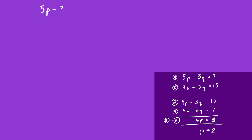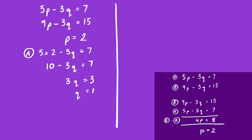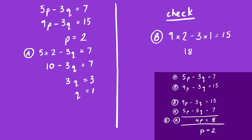Now stage two: substitute back in to find q. We can use either A or B — I'll use A. So 5 × 2 − 3q = 7; that's 10 − 3q = 7. 10 minus what makes 7? It must be 3, so 3q = 3, meaning q = 1. Finally, let's check by substituting back into B: 9 × 2 − 3 × 1 = 18 − 3 = 15. Correct.